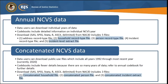Annual files include individual year of data, and codebooks contain detailed information for that particular year. There are five data files included when you download an annual data study from NACJD. Study is the term NACJD uses to refer to the data collection they are archiving, and they have studies available in a variety of software types.